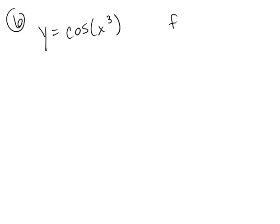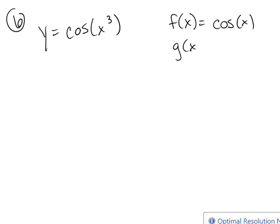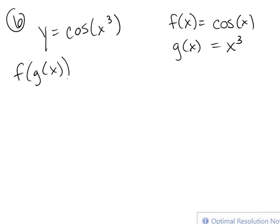So note that if we let f of x equal the cosine of x, and g of x equal x cubed, then f of g of x will be exactly the cosine of x cubed. All right.